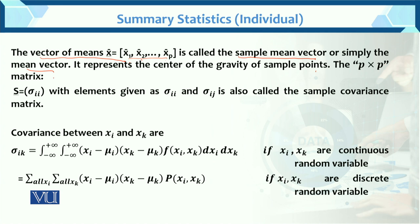The p×p matrix — as explained previously — where sigma_{ii} is given the notation of the x vector. For a single variable, with elements sigma_{ii} and sigma_{ij}, this is called the sample covariance matrix, denoted S. The covariance between x_i and x_j is sigma_{ik}. If x_i and x_k are continuous random variables, we use the integral; if discrete, we use summation.